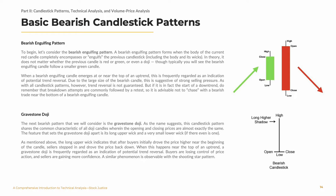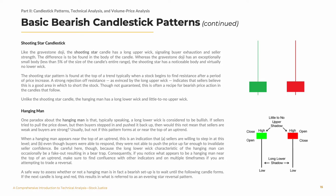A similar phenomenon is observable with the shooting star pattern. Like the gravestone doji, the shooting star candle has a long upper wick, signaling buyer exhaustion and seller strength. The difference is to be found in the body of the candle. Whereas the gravestone doji has an exceptionally small body — less than 5% of the size of the candle's entire range — the shooting star has a noticeable body and virtually no lower wick. The shooting star pattern is found at the top of a trend, typically when a stock begins to find resistance after a period of price increase. A strong rejection off resistance, as evidenced by the long upper wick, indicates that sellers believe this is a good area in which to short the stock. Though not guaranteed, this is often a recipe for bearish price action in the candles that follow.